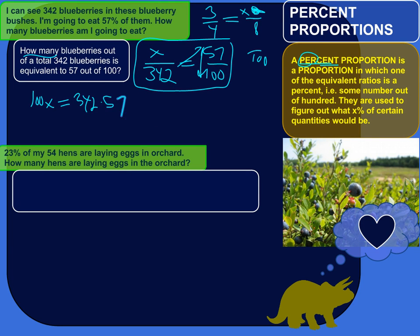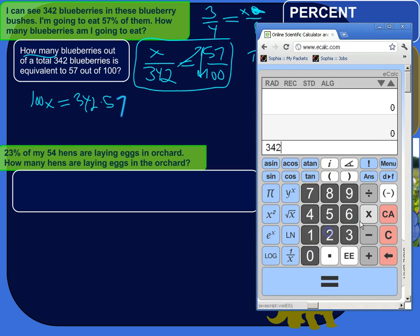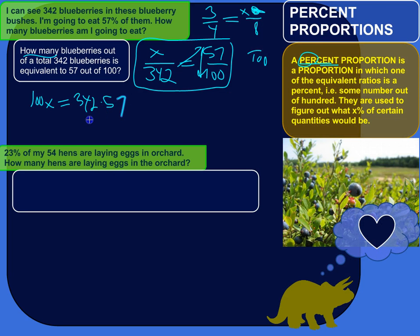Okay, so let's say 342 times 57 is 19,494. Wait, is that what, yeah, 19,494, and 100x is equal to that.